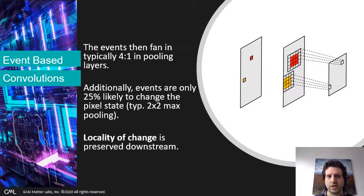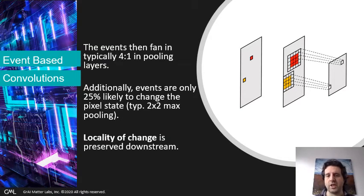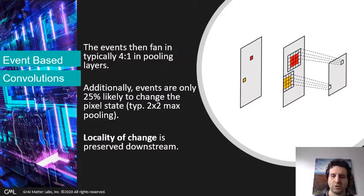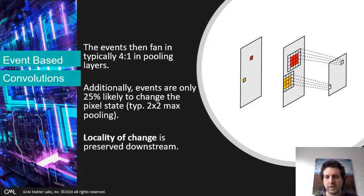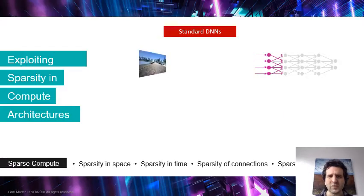The same thing I can argue for pooling operations, where essentially I take one area and I scale it down to a smaller area on a smaller feature map — again, I'm preserving locality of change in the downstream. This suggests that when I process a neural network, if I try to process the change between two inferences instead of doing a full inference, I only process the change of the original inference that I made. I actually end up just doing a localized change that goes through the network and only affects local change across the network.